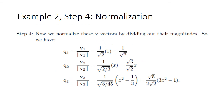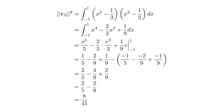The last step is to normalize the V vectors by dividing out their magnitudes. Q1, the normalized V1, equals 1 over the square root of 2. Q2, the normalized V2, equals x divided by the square root of two-thirds. Q3, the normalized V3, equals 1 divided by the square root of 8/45 times the V3 vector, which results in (√5)/(2√2) times (3x² − 1). The details of computing the norm for V3 are shown, explaining where the value 8/45 comes from.